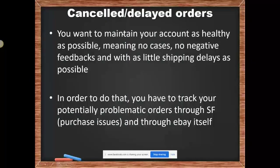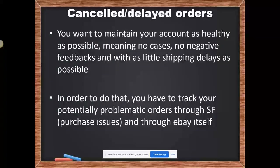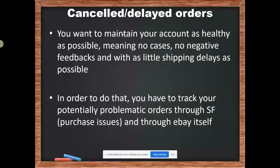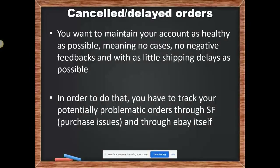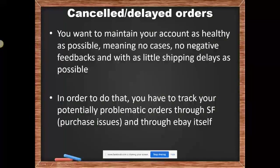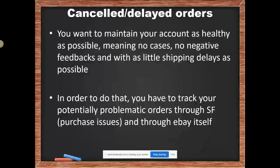When you work primarily with Amazon as your supplier, Amazon is known to cancel orders for no good reason because they don't like people dropshipping off of them. Those cancelled orders can become overdue orders, and then you get angry buyers who were expecting their item on a certain date and don't get it — they leave negative feedback or open a case.